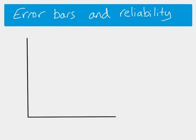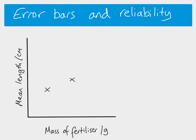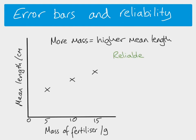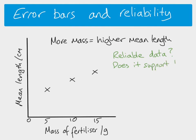One final point about reliability: we can also use error bars in line graphs. Let's say we looked at the mean length of carrots with different masses of Miracle Grow fertilizer applied — 5, 10, and 15 grams — and got those mean values. Without error bars the conclusion looks like: as we increase mass, we increase mean length. But the question is whether that conclusion is reliable and whether the data actually supports it. If we put the error bars on — calculated using standard error, so bars are different lengths for each data set — we then look for overlap.